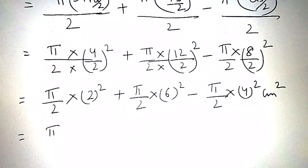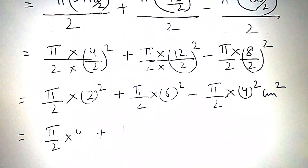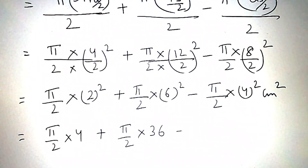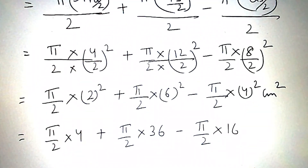That gives π by 2 into 4 plus π by 2 into 36 minus π by 2 into 16.